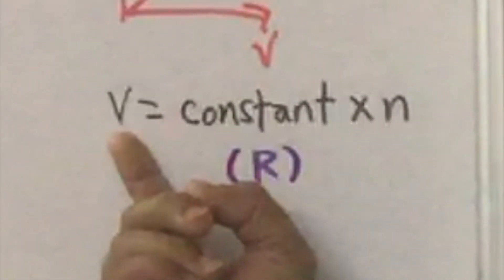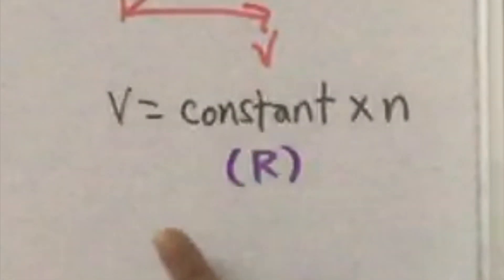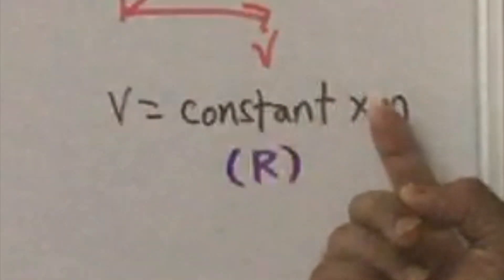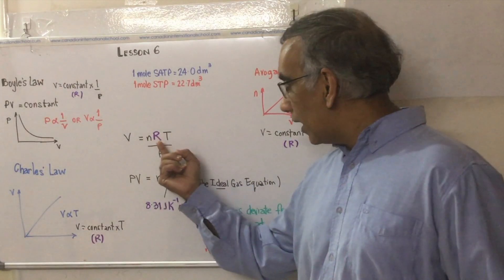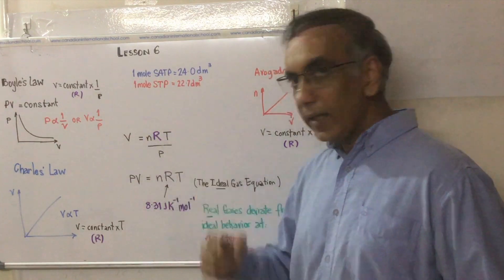V, the volume, is equal to some constant, which we're going to call R, multiplied by N, the number of moles. V is equal to R multiplied by N.